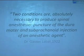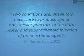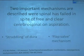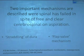Looking at the literature, Gaston-Labert in 1922 said two conditions are absolutely necessary to produce spinal anesthesia: one, the puncture of the dura mater, and two, subarachnoid injection of the anesthetic drug. These only are the two important conditions. Two important mechanisms were described in an article from BJA, where they described the mechanism of failed spinal in spite of having a free and clear CSF flow.